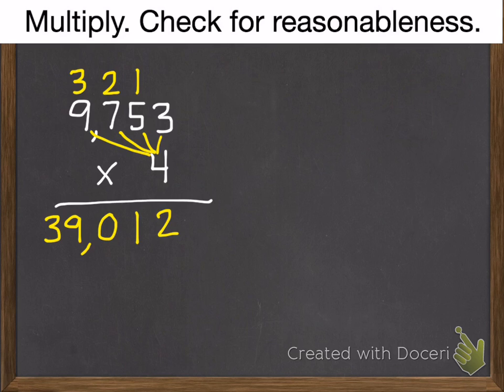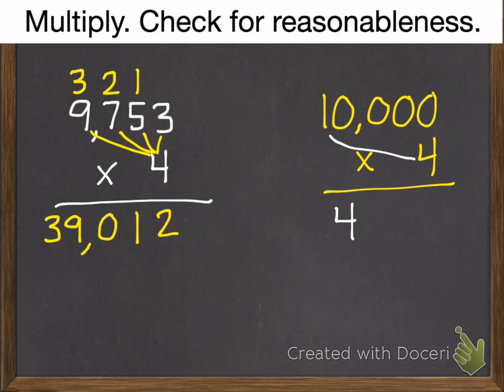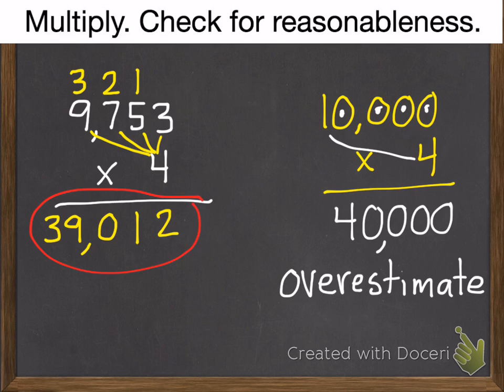And I check it. I look at my greatest place value. It's a nine. The number after it's a seven. So I'm going to make that nine one bigger. I'm going to make it a ten. So it's going to be ten thousand times four. One times four is four, and I have four zeros. So four zeros gives me forty thousand, which is going to be a little bit over the real answer, which it is. So I'd say that is reasonable.